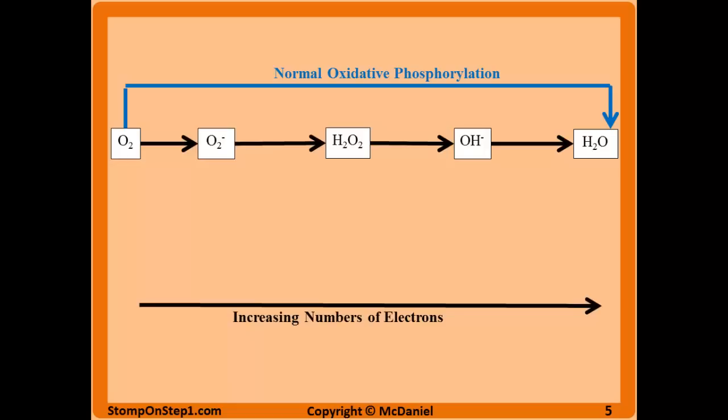Water and oxygen aren't free radicals, and peroxide isn't really a free radical but it can be easily converted to some. The key free radicals in this pathway are superoxide and hydroxide. Normal oxidative phosphorylation does not create free radicals because you convert all the way from oxygen to water. But if oxidative phosphorylation is interrupted, that's how you end up with free radicals — you stop the process partway through.